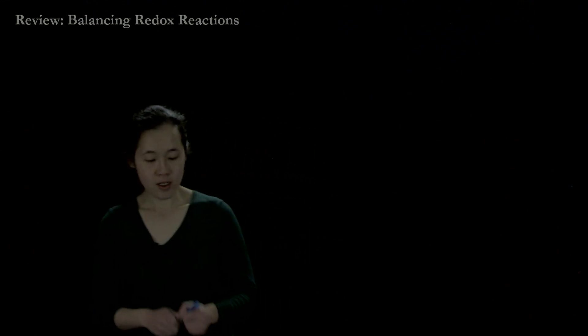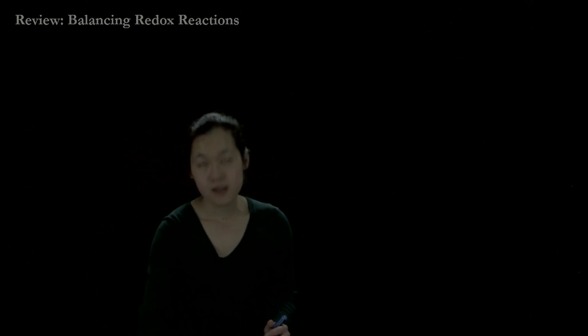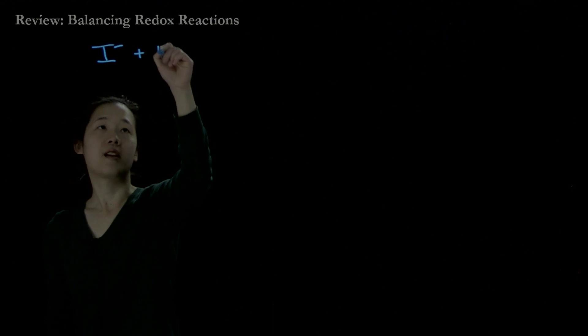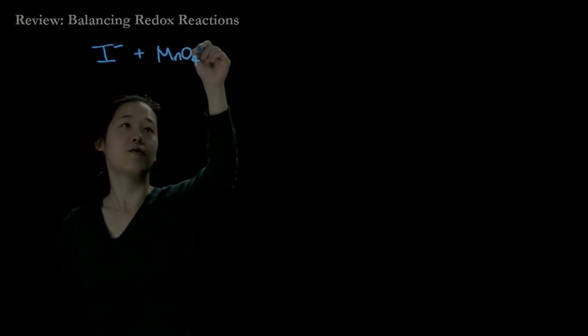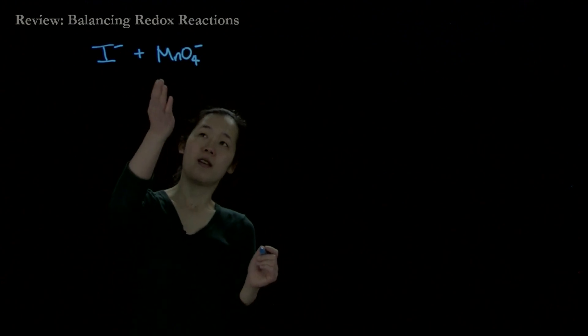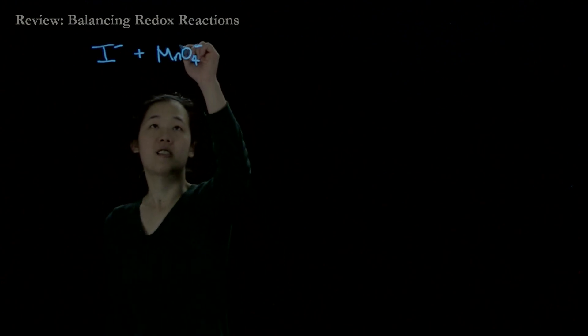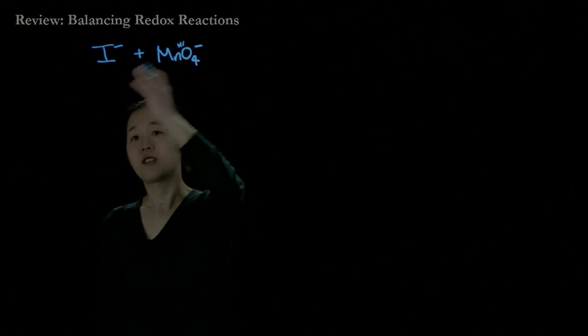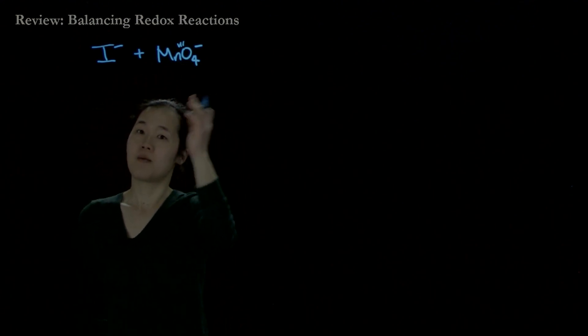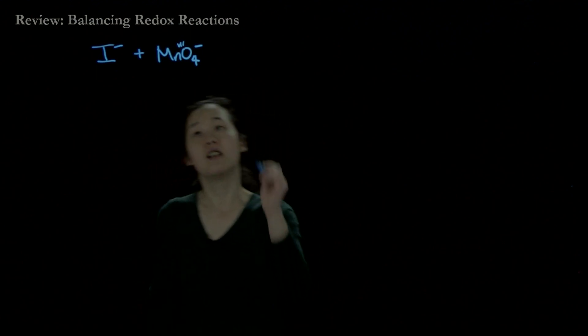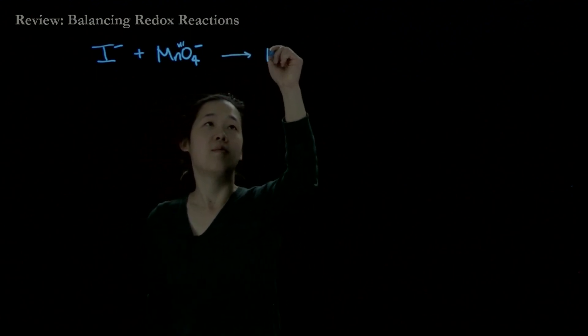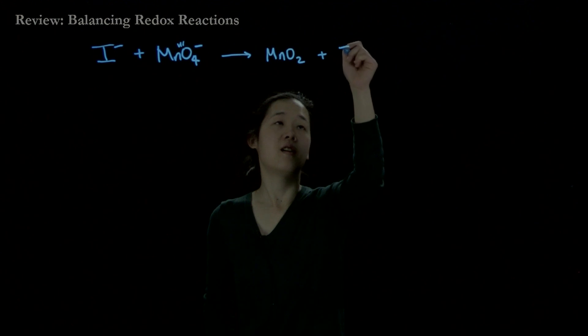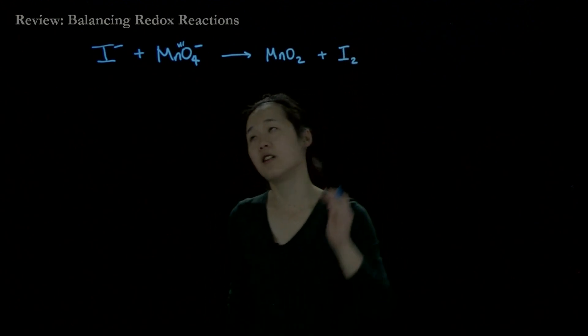One example we'll do is balancing the reaction of iodide (I-) with permanganate (MnO4-). Permanganate is in the manganese +7 oxidation state, so it's very oxidizing and wants to go to a lower oxidation state. Iodide can be oxidized to higher oxidation states of iodine. Under basic conditions, this forms manganese oxide (MnO2), which is manganese +4, and elemental iodine (I2).